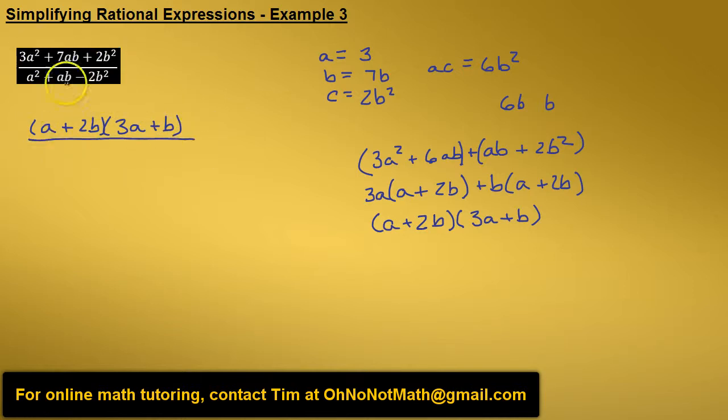So now let's factor the denominator. We have a trinomial with a leading coefficient of 1, so we know that we're going to have the product of two binomials. First term in each one is going to be a, a times a gives us the a squared.